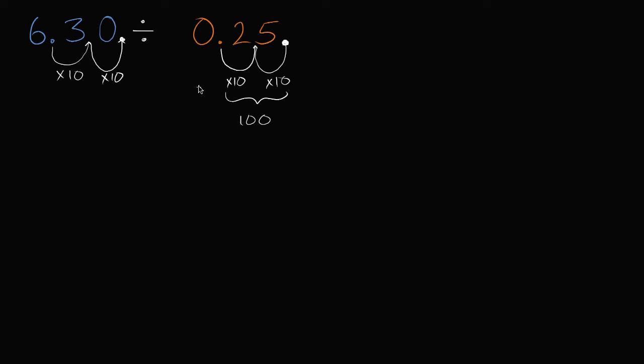So 6.3 divided by 0.25 is the same thing as 630 divided by 25. Let me do that again because this is really the tricky part when you're dividing decimals. If I were to write 0.25 being divided into 6.3, what I care about is moving this decimal to the right far enough so that this becomes a whole number. I don't have to move it any further, just far enough so this becomes a whole number. Then I have to move this the same number of times to the right. So if I move it two spaces to the right, one, two, 0.25 becomes 25.